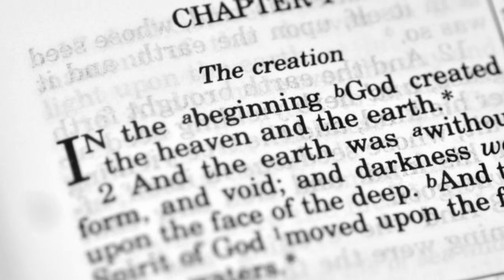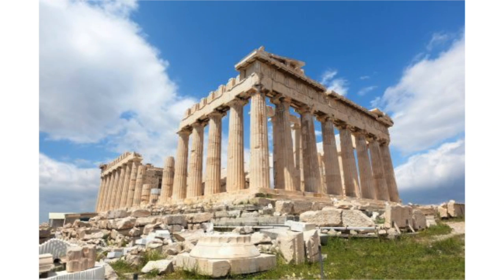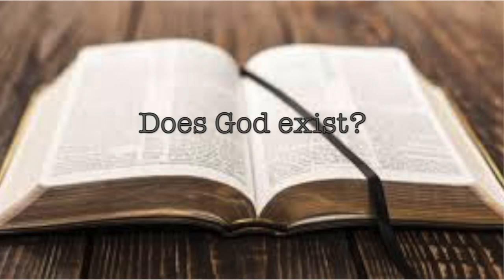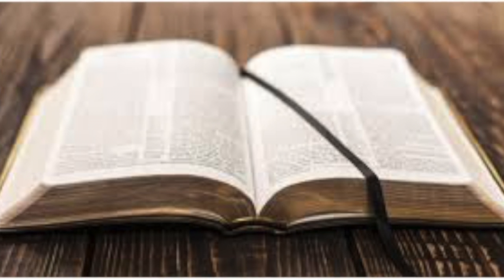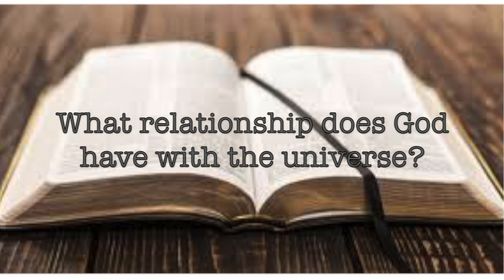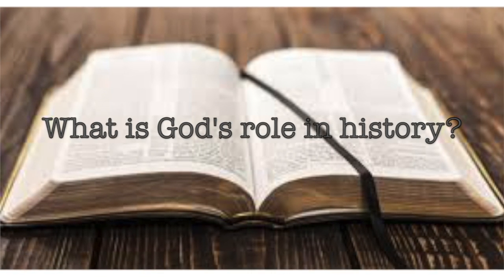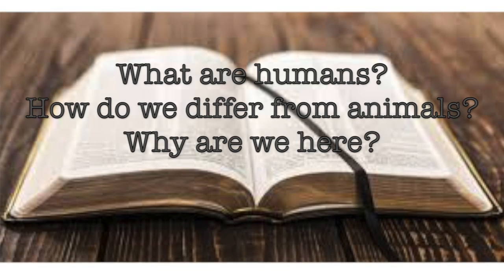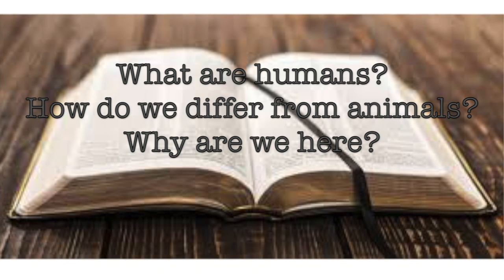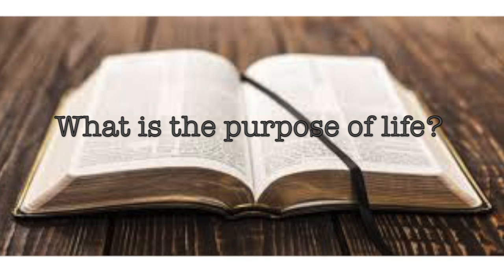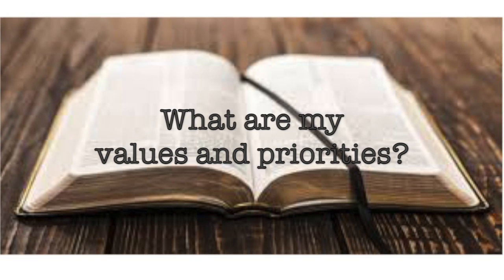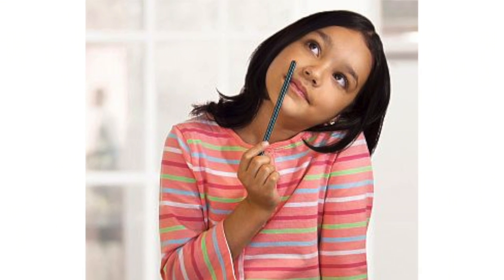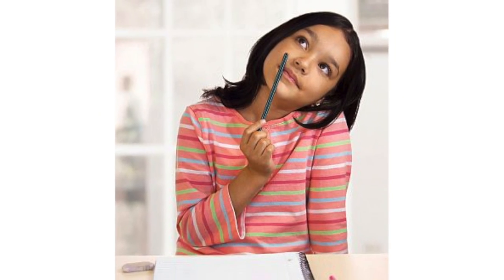We begin in Genesis and finish with Ancient Greece. Beginning in Genesis, we solidify our worldview by answering questions like: Does God exist? If so, what relationship does God have with the universe? What is God's role in history? What is the role of government? What is liberty? What are humans? How do we differ from the animals? And why are we here? What is the purpose of life? What are my values and priorities? How an individual answers these questions is the framework in which he or she reasons and relates to the world and life events.